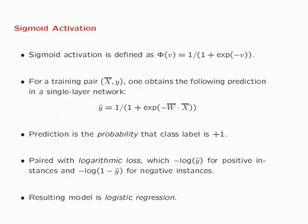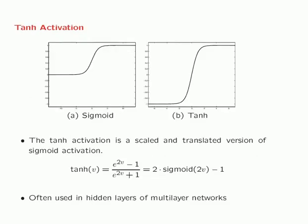The sigmoid activation is also used very commonly in multilayer networks, often within the hidden layers as well. The hyperbolic tangent activation is a scaled and translated version of the sigmoid activation — if you horizontally and vertically scale the sigmoid activation, what you get is the hyperbolic tangent activation. Note that the sigmoid activation is always non-negative, with positive values for all real values of the argument.